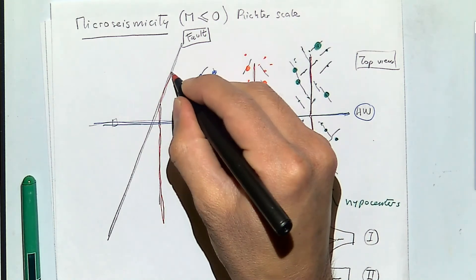For unpropped fractures, the permeability is inversely proportional — on a log scale — to the effective normal stress. As pore pressure decreases during production, effective normal stress increases and the fracture permeability goes down.